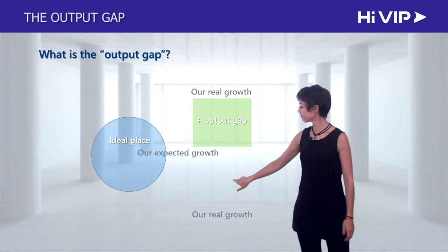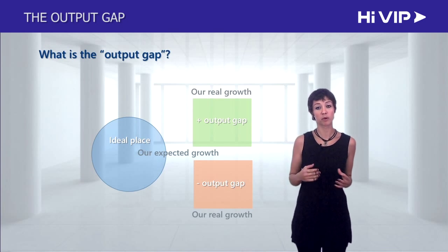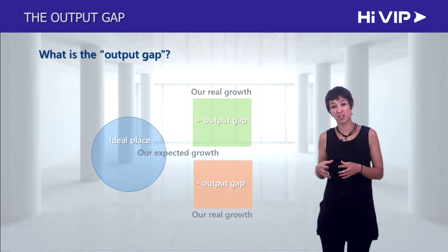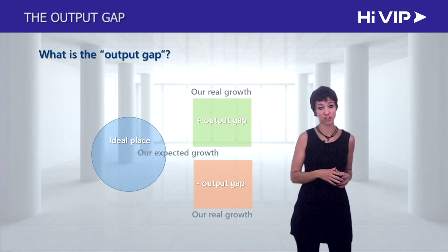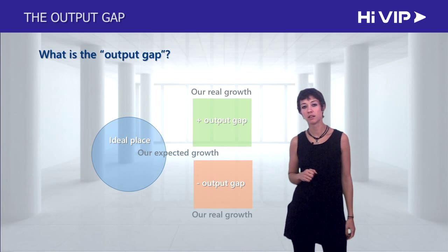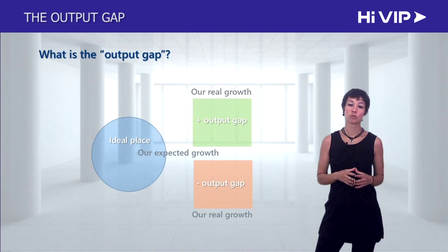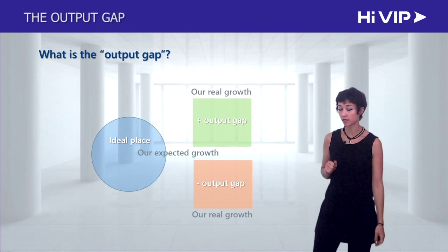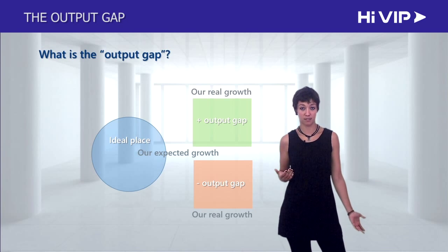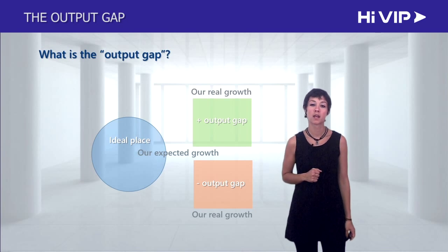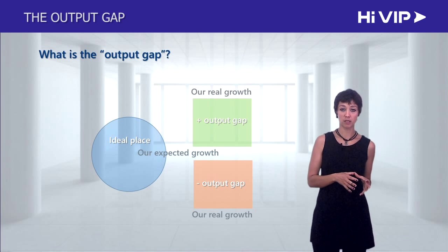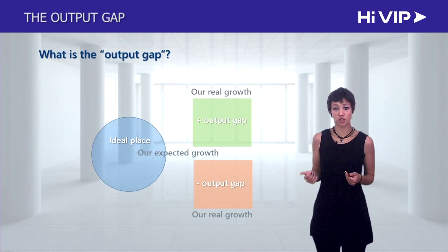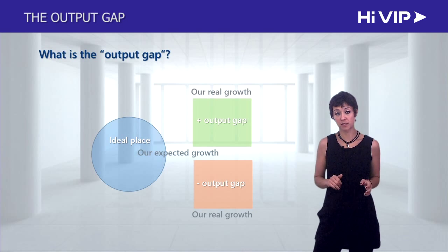Or we can have a negative output gap when we're growing slower than we would like to be — slower than we actually should be if we wanted inflation and unemployment to be reasonable. If we're growing too slowly, we have a negative output gap, and on the chart it will show up as negative numbers. If we're growing right where we should be, there's no output gap, and that will show up at zero.